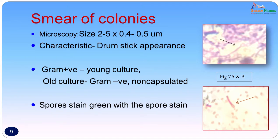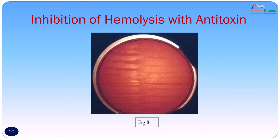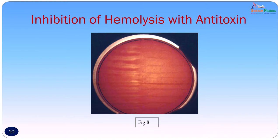Using spore stain with malachite green and safranin, the spore took up the green stain while the bacterial body took up the pink stain. To confirm that the isolate was Clostridium tetani, a blood agar plate was taken — on half the plate antitoxin was spread, and streaks of the organism were made across the plate. On the half with no antitoxin, beta hemolysis was seen, while the half with antitoxin showed inhibition of beta hemolysis. Swarming was also inhibited on the half where antitoxin was applied, confirming the organism was Clostridium tetani.